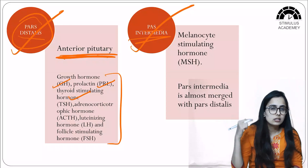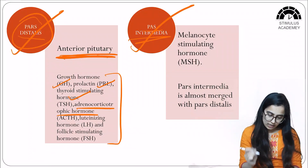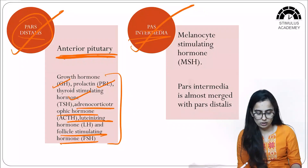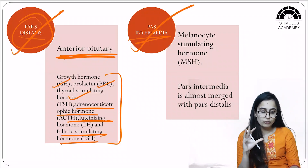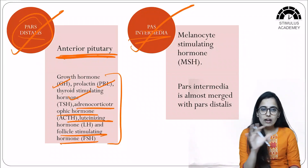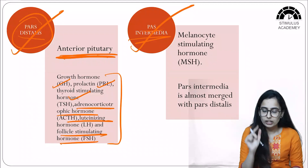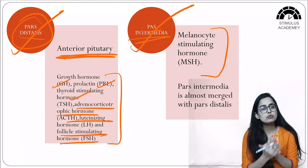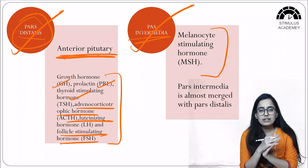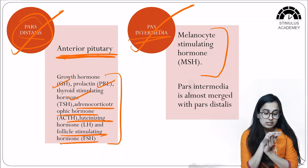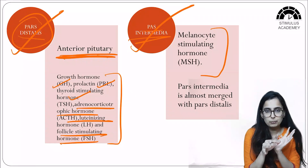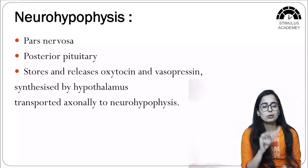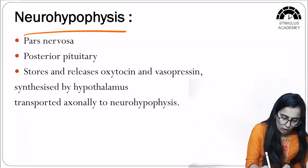These hormones are released from the anterior pituitary. Pars intermedia secretes only one hormone: melanocyte stimulating hormone (MSH). The pars intermedia is almost merged with the pars distalis. This covers all the components of the adenohypophysis.